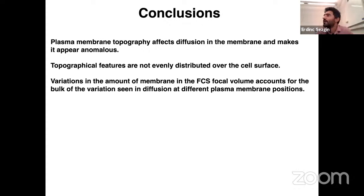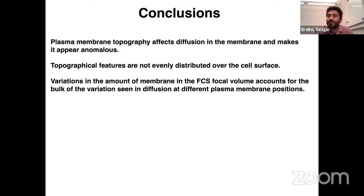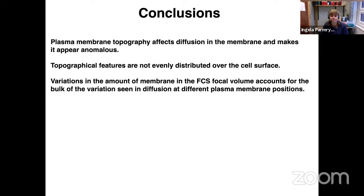An audience question: the membrane marker you're using — is it C12 DiI? If different fatty acid chain lengths and saturation were used, would diffusion change as a function of topology as well? We actually used two different DiI dyes in the study — the DiIC12 and one with a longer acyl chain — and we could not see any difference between the two. Both, as far as we know, are reasonably good markers for the entire membrane and don't have preferential partitioning to raft or non-raft domains.